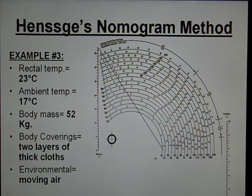In this example, because the ambient temperature is 17 degrees Celsius, I'm using a nomogram that goes up to 23 degrees for the external temperature.